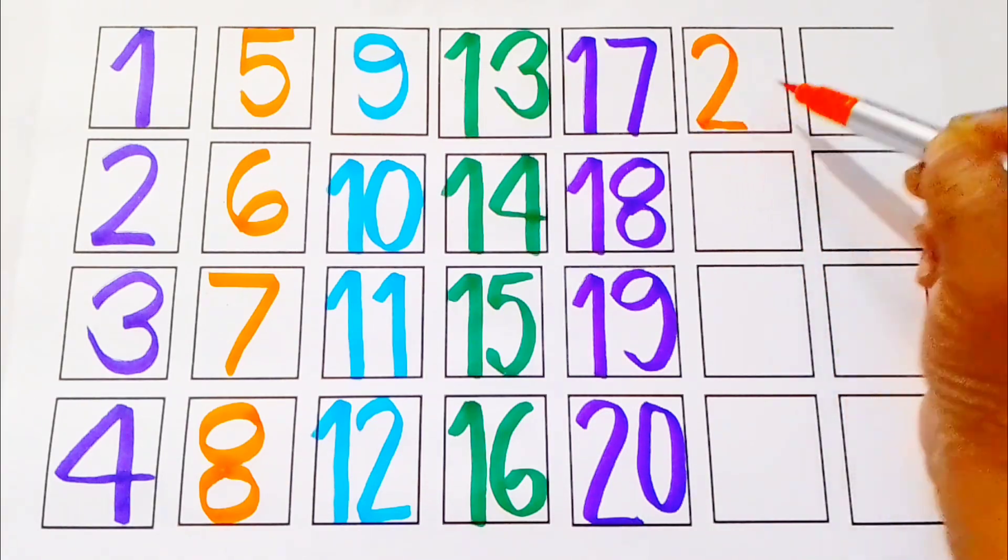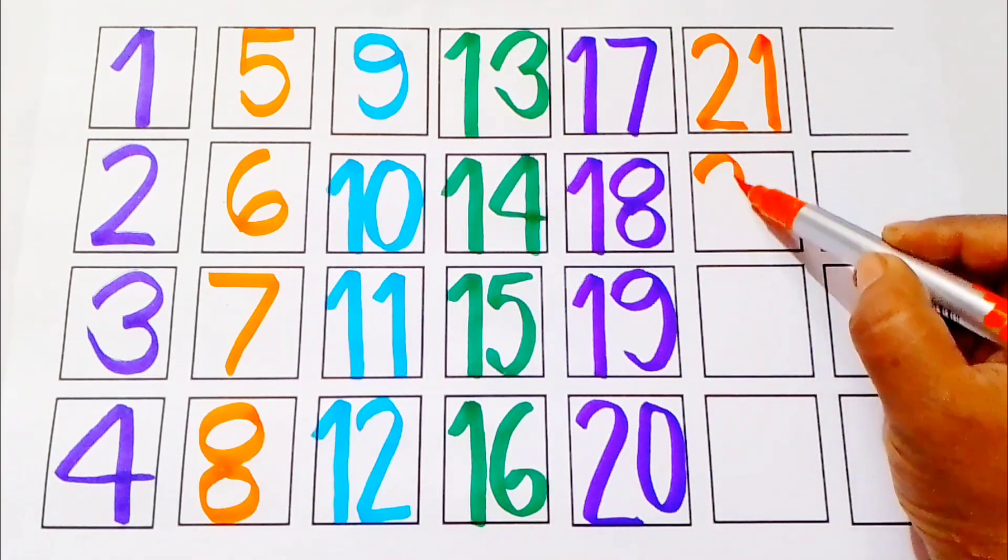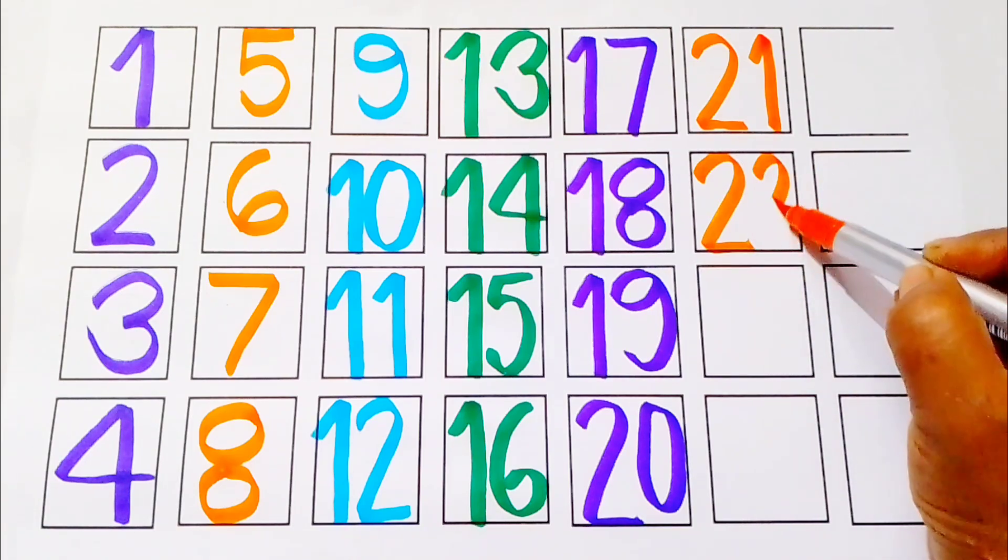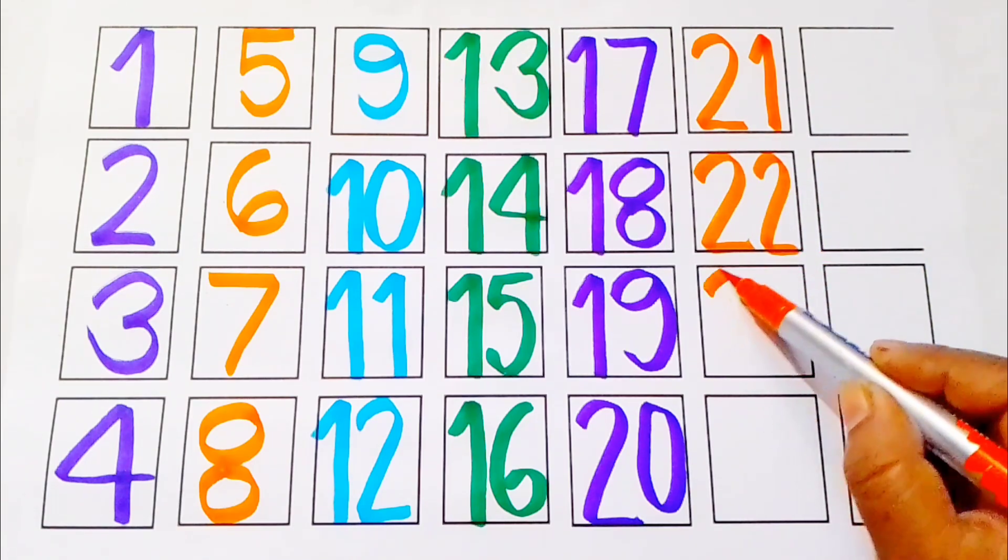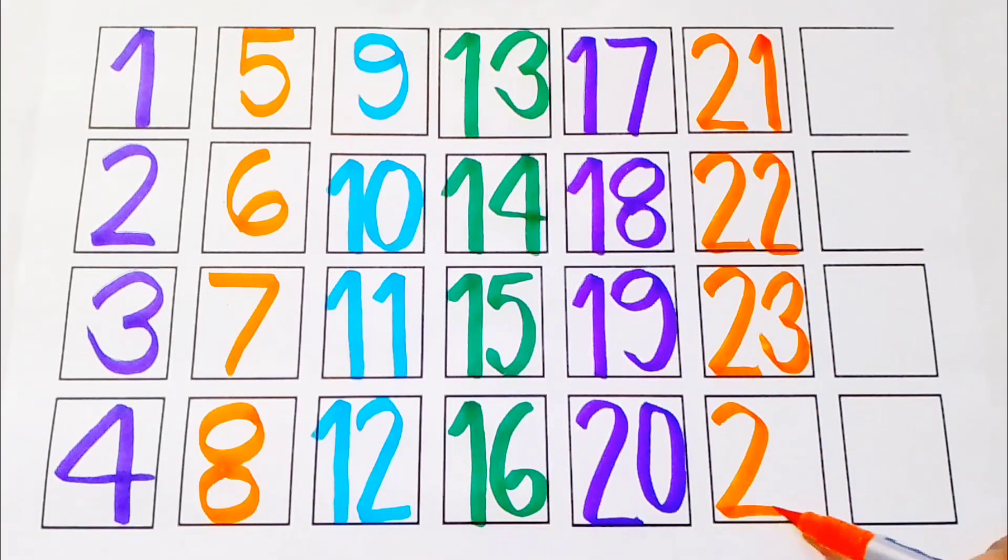Orange color. Two, one. Twenty-one. Two, two. Twenty-two. Two, three. Twenty-three. Two, four. Twenty-four.